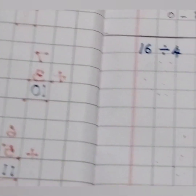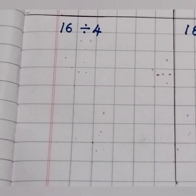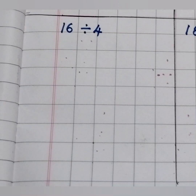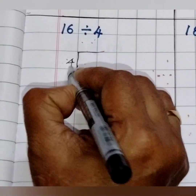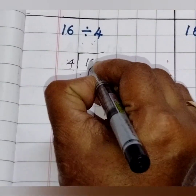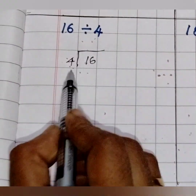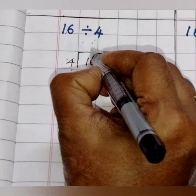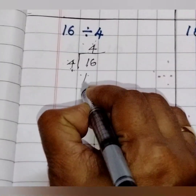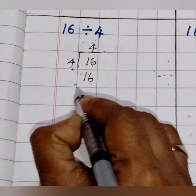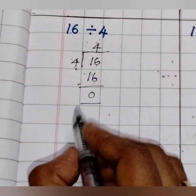Now coming to the next question: 16 divide by 4. You have to divide 16 using the 4 table. So 4 I am writing outside and 16 I will write inside. Now check in the 4 table when 16 comes. 4 fours are 16. Since the video will become lengthy, I am going directly to the answer. 4 fours are 16.